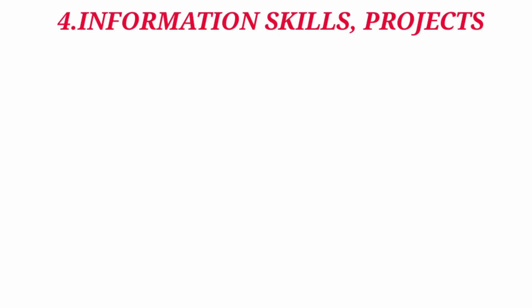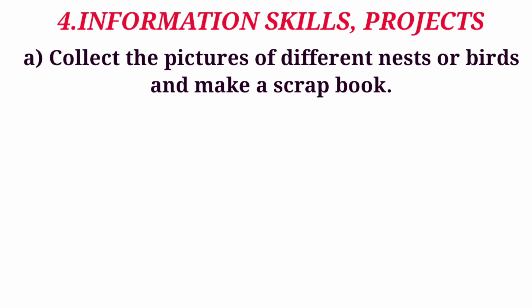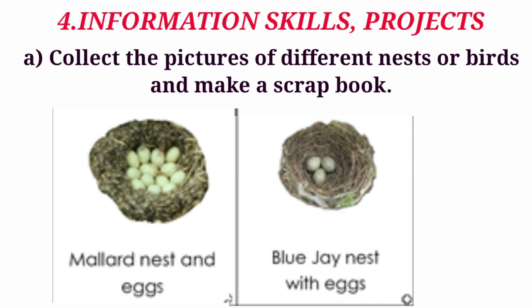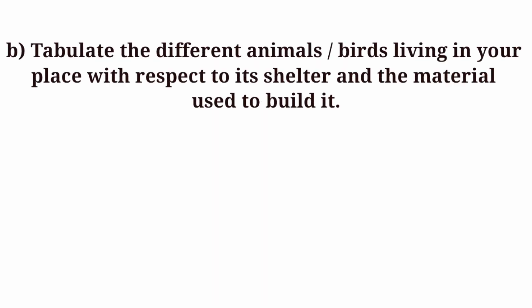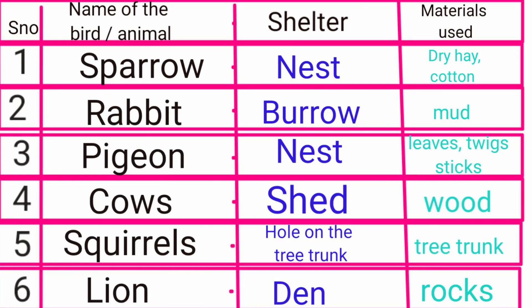Information Skills and Projects, Question A: Collect the pictures of different nests of birds and make a scrapbook. Here are pictures of a mallard nest with eggs and a blue jay nest with eggs. You can collect some more pictures of different nests of birds. Question B: Tabulate the different animals or birds living in your place with respect to its shelter and the material used to build it. In this way you can complete the table as shown.